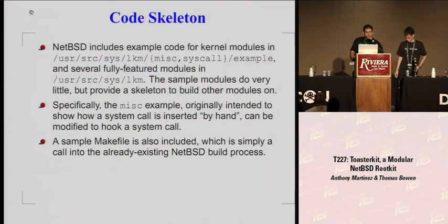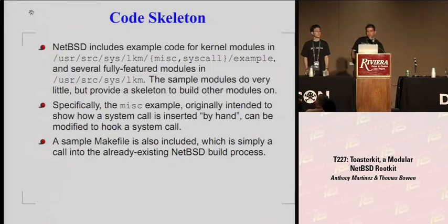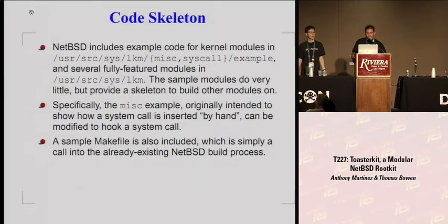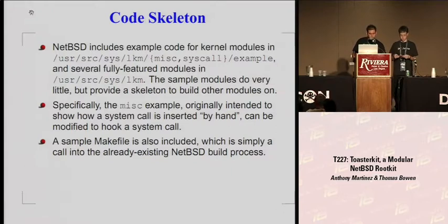The code we used basically came from sample skeletons inside the NetBSD kernel that gave a lot of information on how to create system calls in loadable kernel modules. It was very simple to modify those so that instead of adding a new system call, we could create system call hooks. It was very easy — just as little as three lines of code modification to turn code they already gave us into a system call hook.